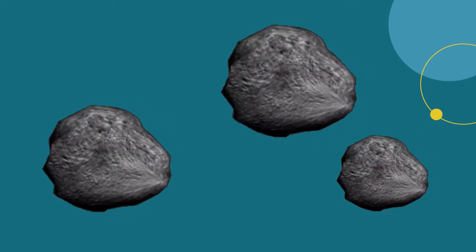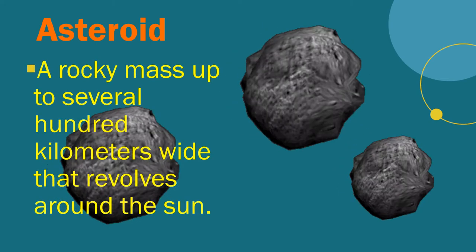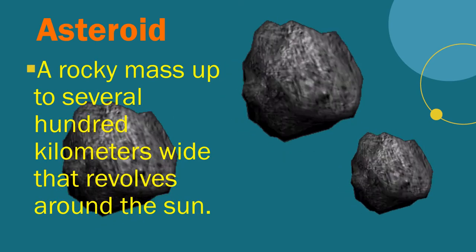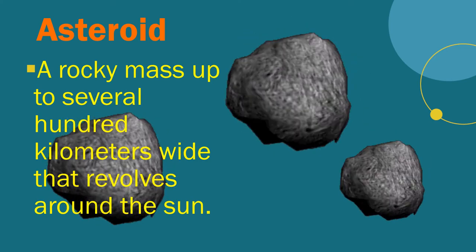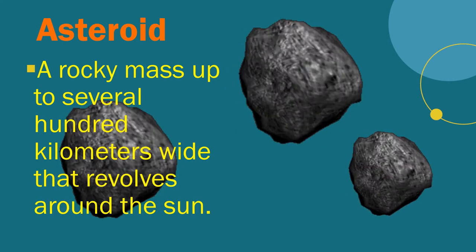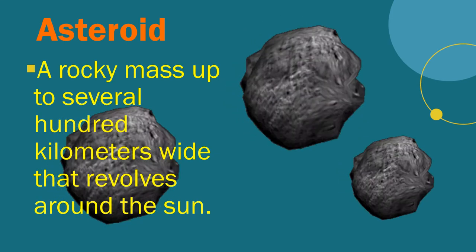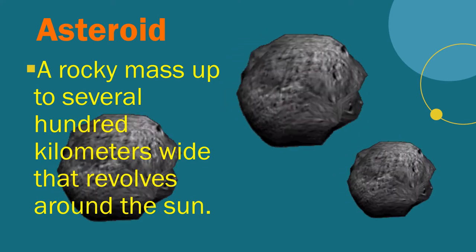Let's go see asteroid. It is a rocky mass up to several hundred kilometers wide that revolves around the Sun. In our solar system, most asteroids orbit in the region between Mars and Jupiter called the asteroid belt. Most of them complete a revolution in three to six years.